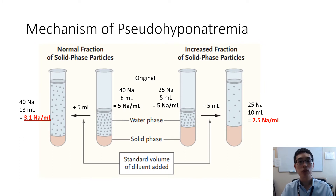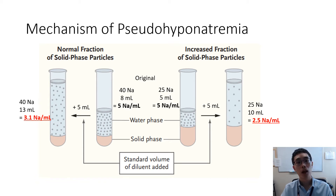In the case where you have pseudohyponatremia with a normal serum osmolality — osmolality levels between 280 to 300 — there is usually an increase in either a protein or lipid that interferes with the measurement of serum sodium.